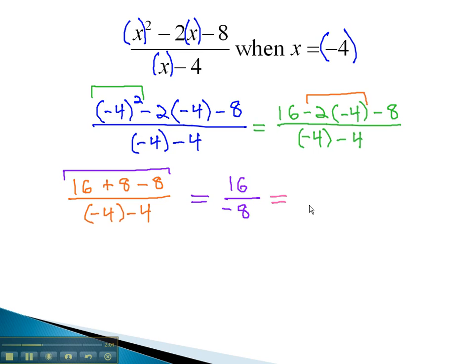We can simplify this fraction by dividing at the end to negative 2. It is important to note that as we simplified the rational expression at the point x equals negative 4, we didn't do the division step or any reducing until after the numerator and denominator were completely simplified.